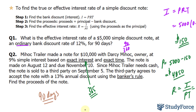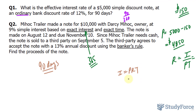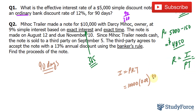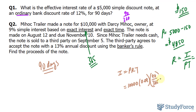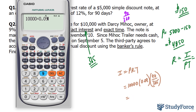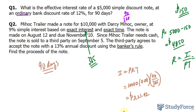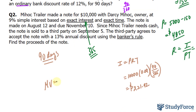So with all that said, let's go back to the question. First, find the proceeds of the note. Using I = PRT: the principal is 10,000, the rate is 9%, and the time is 90 over 365 since it's exact interest. 10,000 times 0.09 times 90 divided by 365 gives approximately 221.92. The maturity value is the principal plus the interest: 10,000 plus 221.92 gives us 10,221.92.